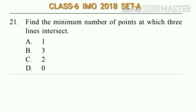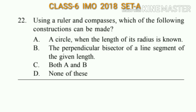Question number 21: Find the minimum number of points at which three lines intersect. The minimum number of points is one, so the answer will be option A.